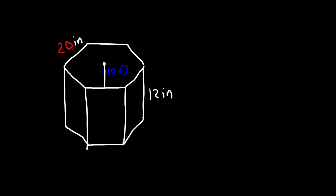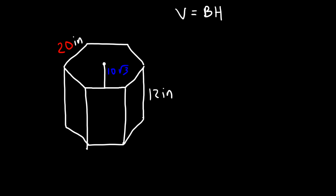With this information, calculate the volume of the prism. The volume is the area of the base multiplied by the height of the prism. We have the height — all we need to calculate is the area of the base. The area of the hexagon is one half AP, where A is the apothem and P is the perimeter.